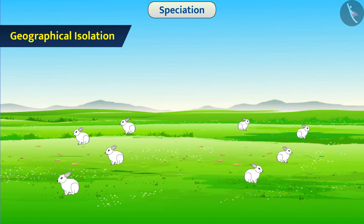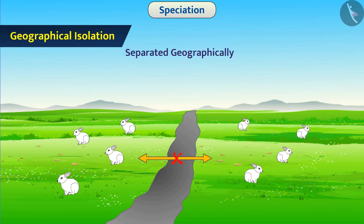Many times, geographical situations, such as development of deep trench, obstruct the contact between the two populations. We say that the two populations are separated geographically. Due to this, the organisms of two groups cannot reproduce with each other, and thus, the genes of one group cannot be transferred to the other.